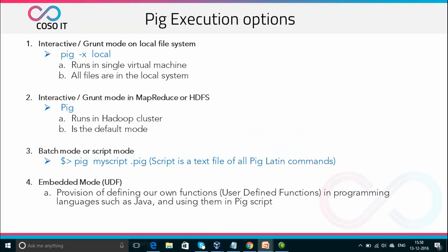Pig can be started in any of the following modes. Interactive or Grunt mode on local file system: type pig -x local. This runs in a single virtual machine and all files are in the local system. Executing the Pig command without any options starts Pig in cluster mode, where Pig can access files on HDFS — this is the default mode.